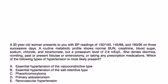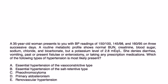Well, let's now take a look at a few clinical vignettes. A 35-year-old woman presents to you with blood pressure readings of 150 over 100, 145 over 98, and 160 over 95 on three successive days. A routine metabolic panel profile shows normal BUN, creatinine, blood sugar, sodium, chloride, bicarb, but a potassium level of 2.8.